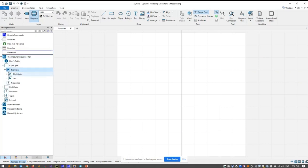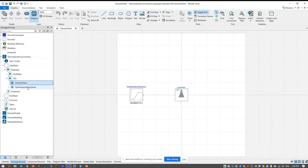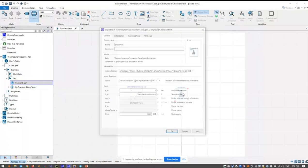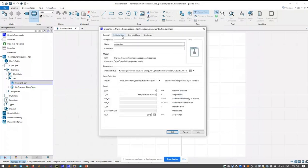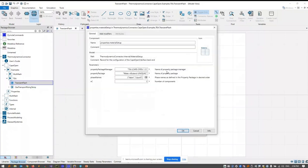And at first, I would like to show you a very simple example where I use a properties model with a property package from the TEA property package manager from AmsterCHEM. So it's as simple as that, there's a properties model. And when I double click, I get the parameter window and can parameterize the property package I want to use.